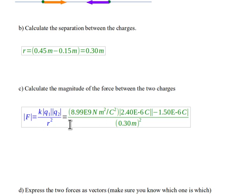My K value is 8.99 times 10 to the ninth newton meter squared per Coulomb squared. On my calculator, it uses the exponent button instead of the times 10 to the button. So your calculator might do that or it might do times 10 to the ninth.